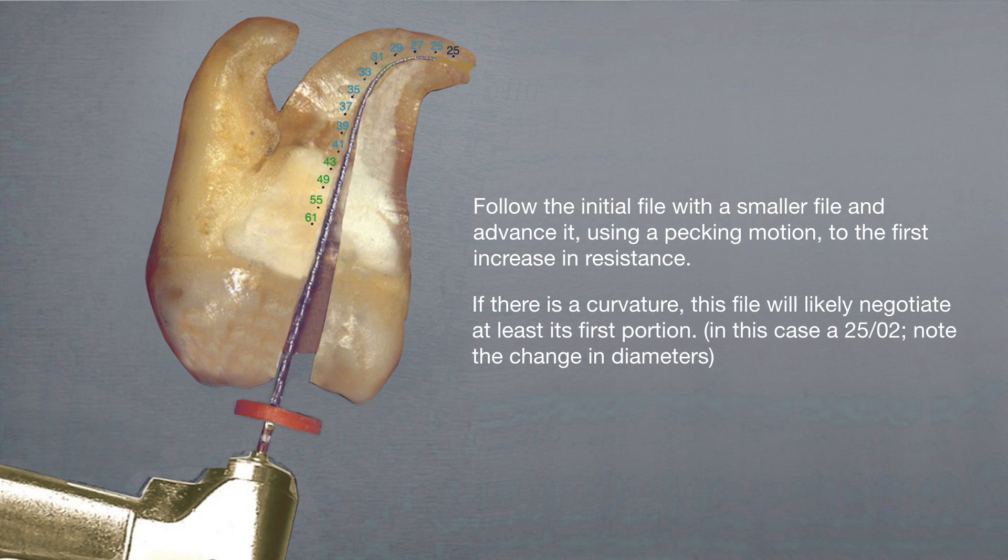If there is a curvature, this file will likely negotiate at least the first portion. In this case, a 2502. Note again the change in diameters indicated alongside the canal.